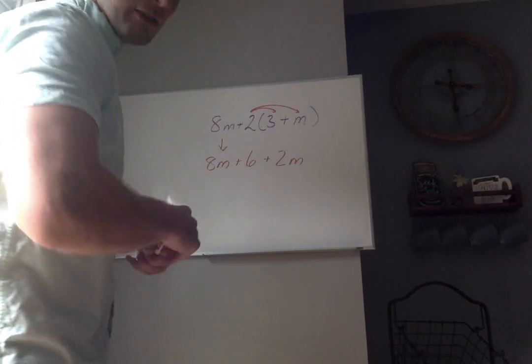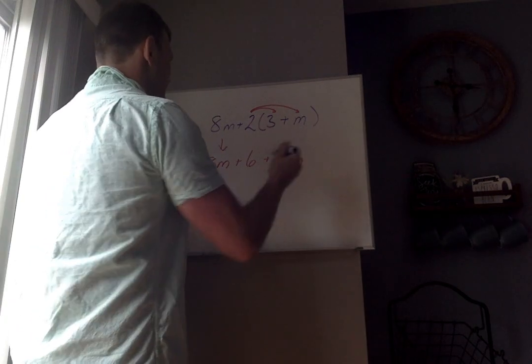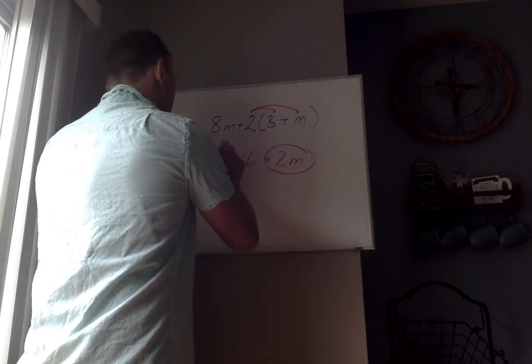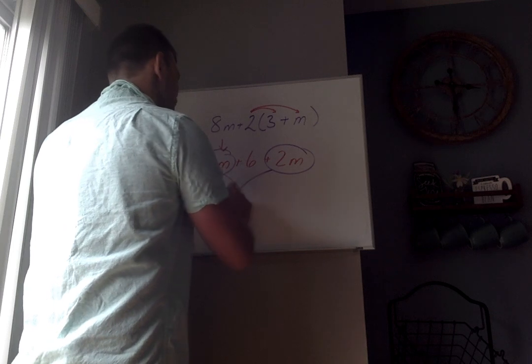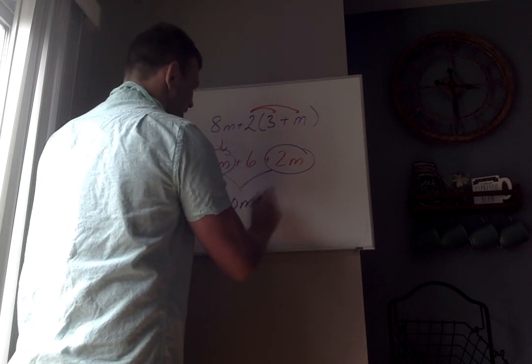But now I have to combine my like terms. Notice both these things have an m. So I'm going to go ahead and I'm going to combine them. So 8 plus 2 is 10, so I have 10m plus 6.